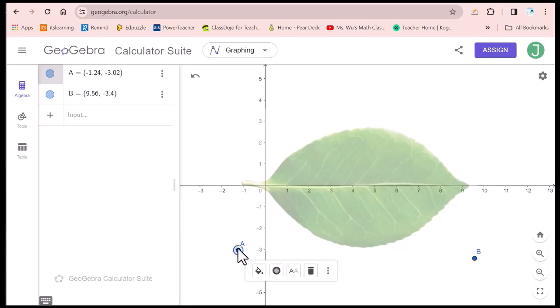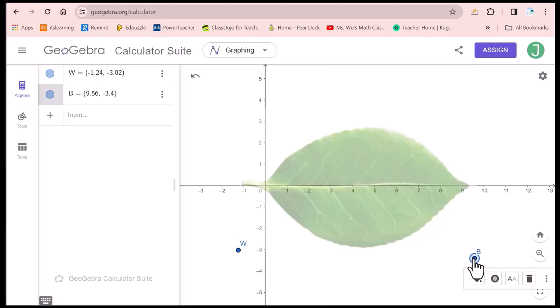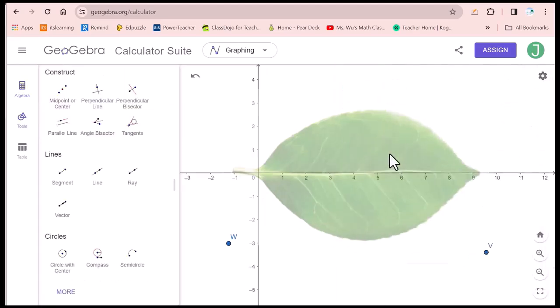Click on this A. Setting. Let's change this into W. And click here. Setting. Let's change this into V. Save. Then you click on this image. Fix object.